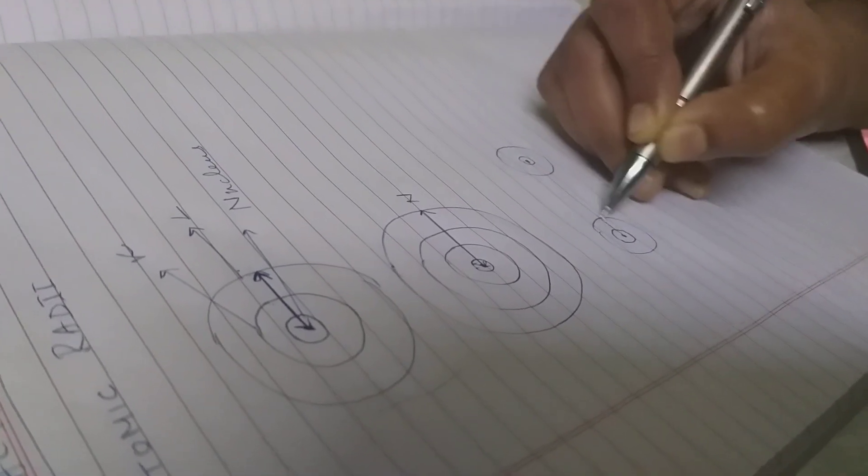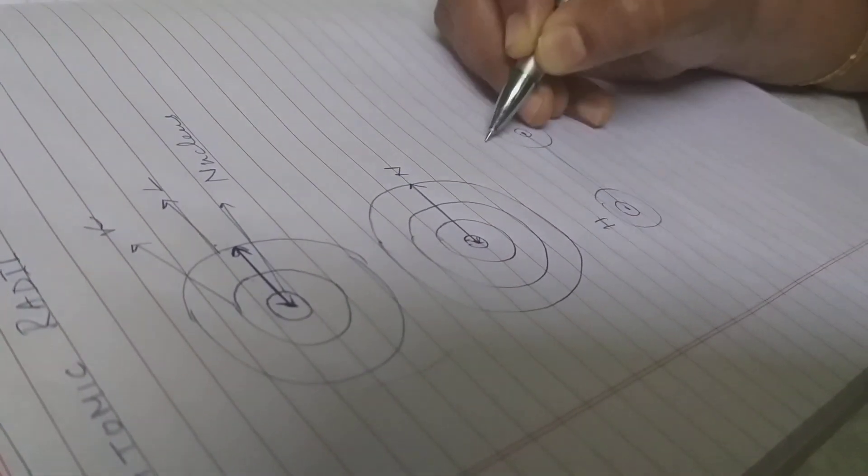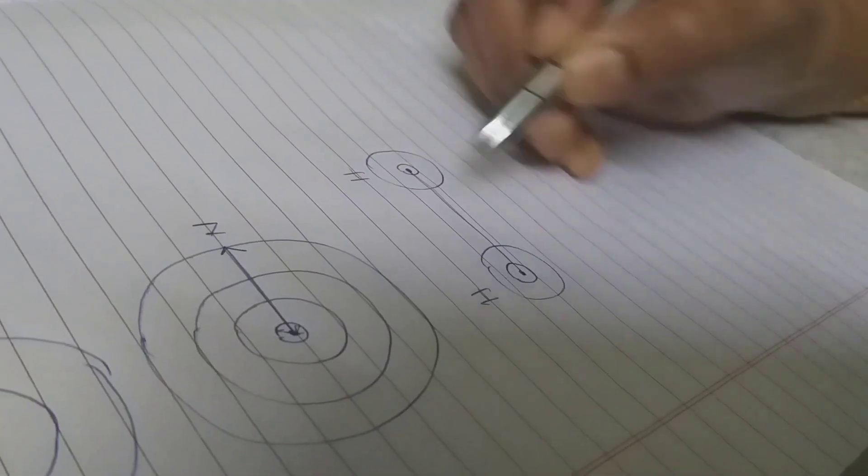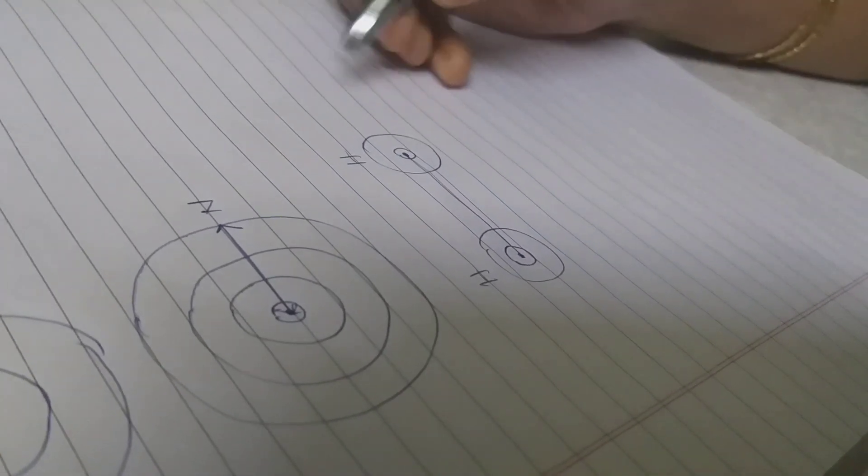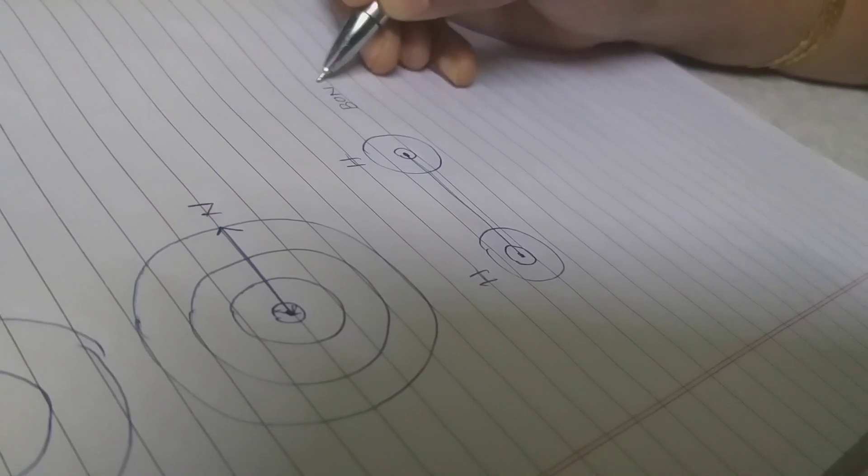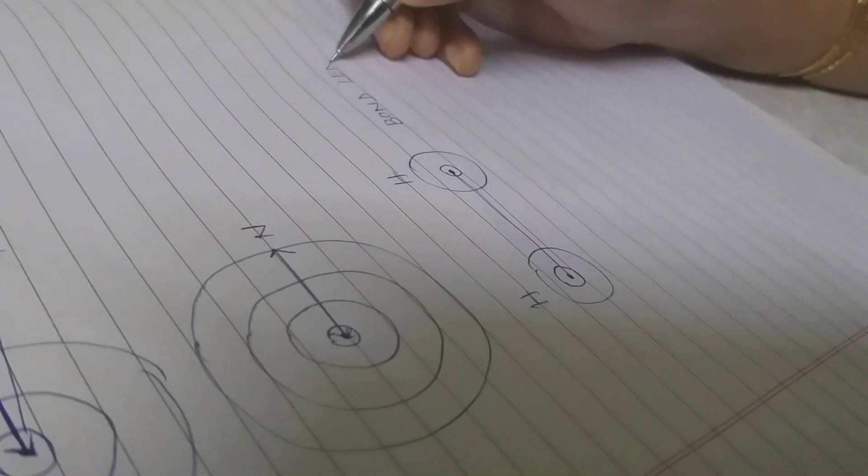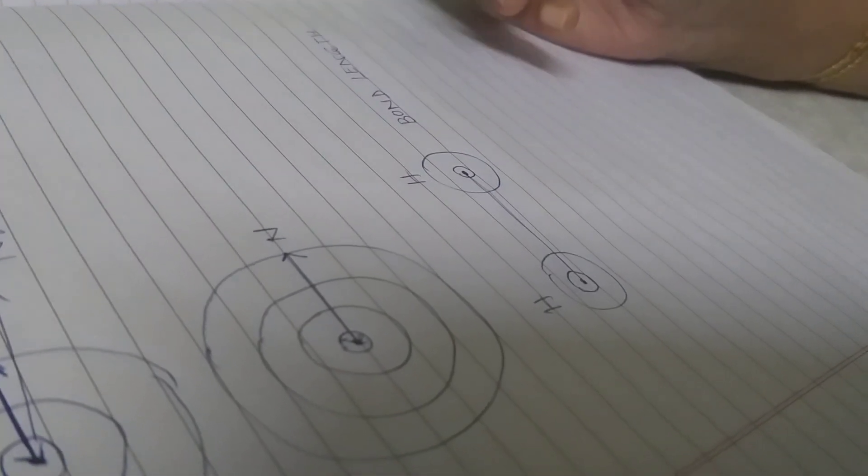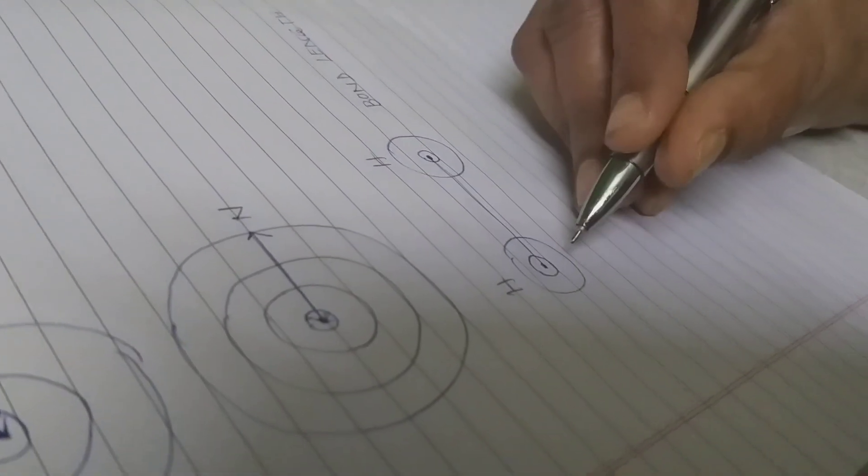So this, from one center to the other, this length, this is one hydrogen atom, this is one hydrogen atom. If I draw from one center of the nucleus to the other center, this is called the bond length. You will find that often we will be going to mention the word bond length.